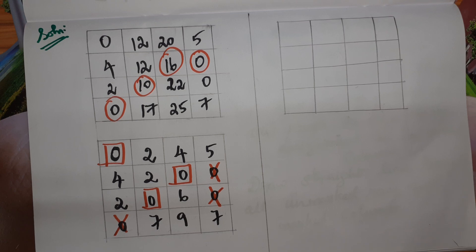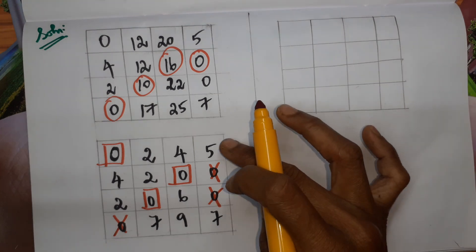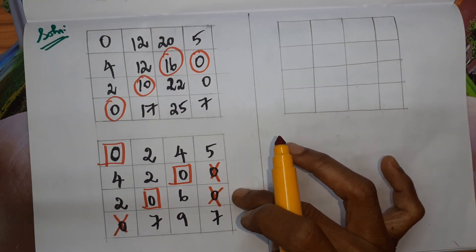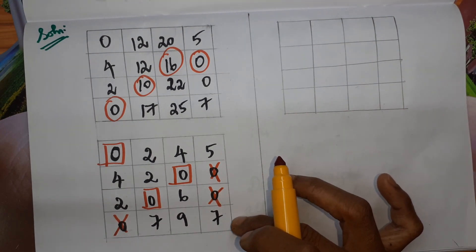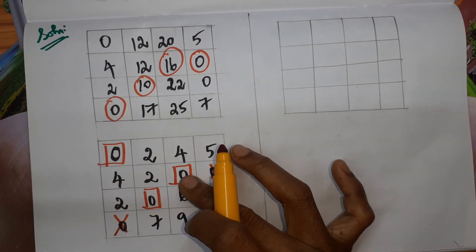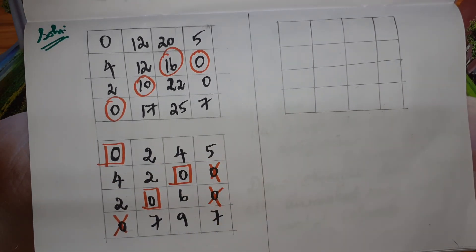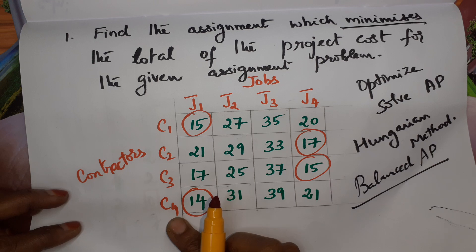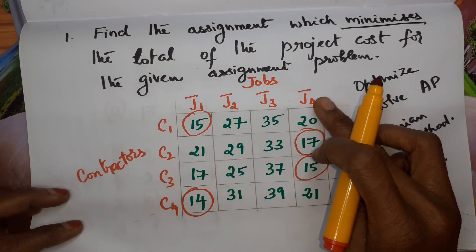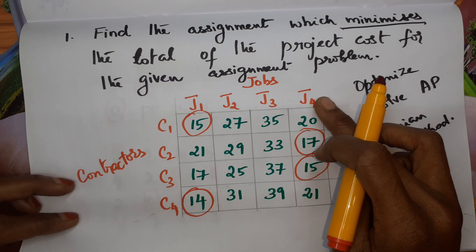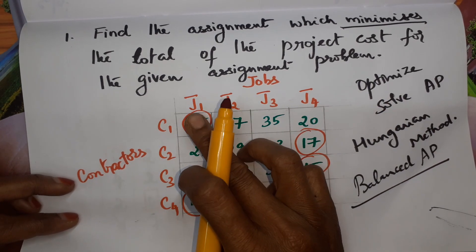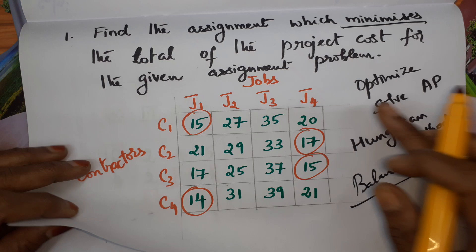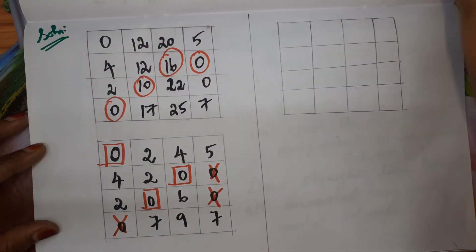Now we check whether every row and every column has an assignment. First row has an assignment, second row, third row — but in the last row we don't have an assignment. Likewise, the last column is also not having an assignment. That means this contractor is not assigned any job, and this job is not given to any contractor. That is not the optimal solution — we have to assign all contractors to all jobs, so we must move on to the next better solution.